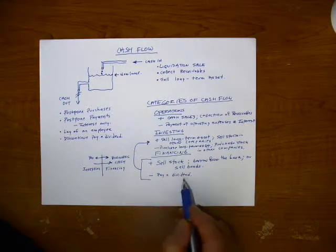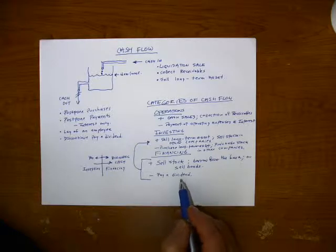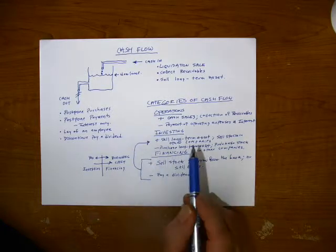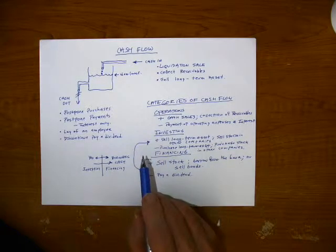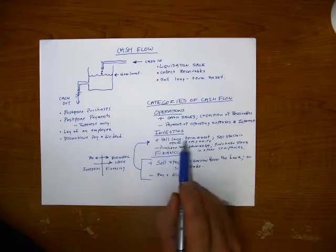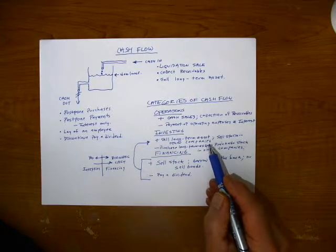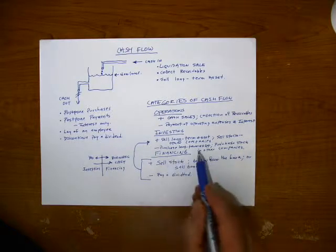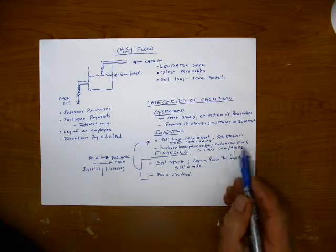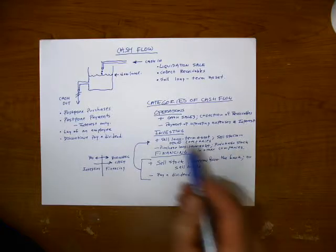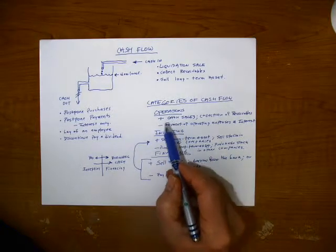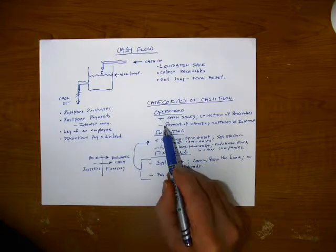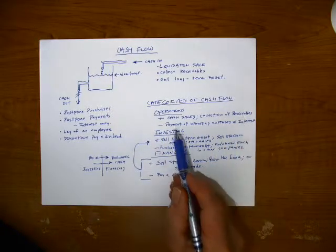Now, the cash generated from financing goes up here to investing because the business, when they put out cash, they're making an investment. So sell long-term asset for cash, and of course it would have to be for cash, and sell stock in other companies, or we purchase long-term assets and purchase stock in other companies. And last but not least, we have operations. Operations represents the reason for us being in business. It's the sales and collection of receivables that bring in cash, and it's the payment of operating expenses and interest that puts out cash.